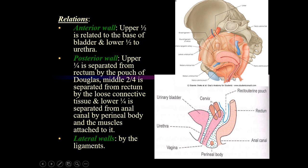The posterior wall is divided into four parts. The upper one-fourth is related to a very important pouch called the recto-uterine pouch, also known as the pouch of Douglas. This is the most dependent pouch when a person is erect, so any free fluid in the abdominal cavity will collect here. The pouch of Douglas separates the upper one-fourth of the posterior wall from the rectum behind it.